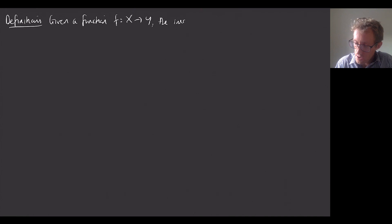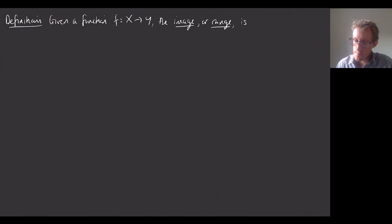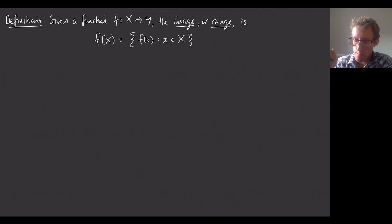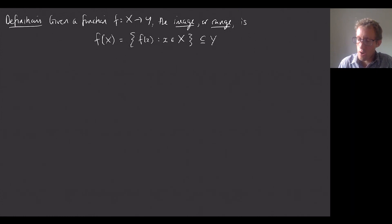Now I want to give a few more definitions. Suppose we're given a function f that maps from X to Y. I'm going to define the image of the function, sometimes called the range. This is a subset of the codomain Y, written f(X), and it's the set of all f(x) for x in X — the set of all elements of Y that we can get to by applying f to elements of X.